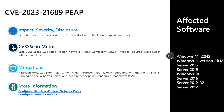There is one mitigation here: the Protected Extensible Authentication Protocol is only negotiated with the client if NPS is running on the Windows server and has a network policy configured that allows PEAP. To stop this, customers can ensure that the PEAP type is not configured as an allowed EAP type in their network policy. There are links in the CVE article with more information on the mitigation. As for affected software, it's all supported versions of Windows — on the desktop side, Windows 10 and Windows 11; on the server side, 2012 through Server 2022.